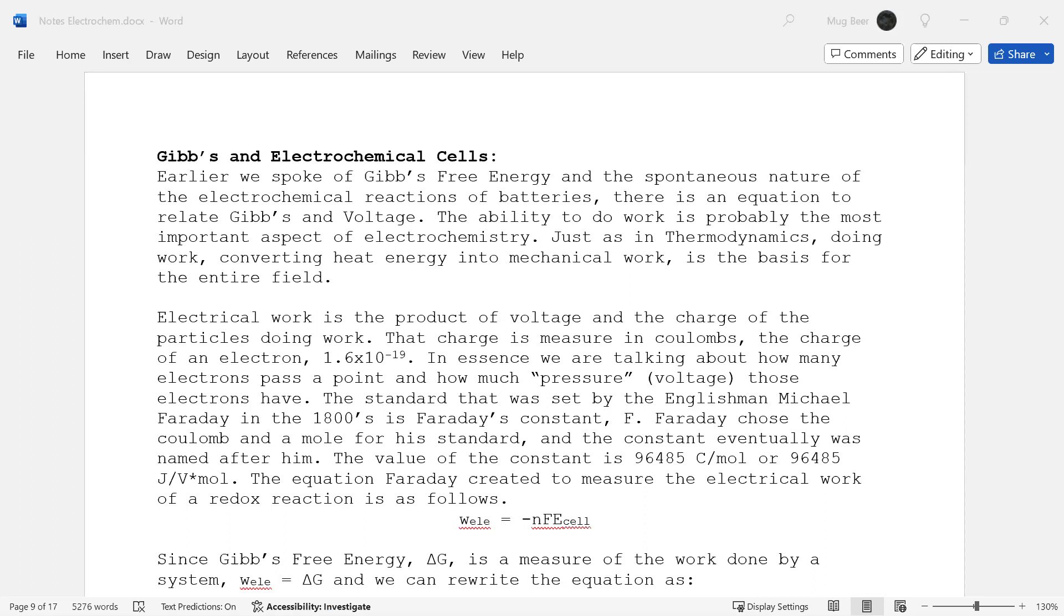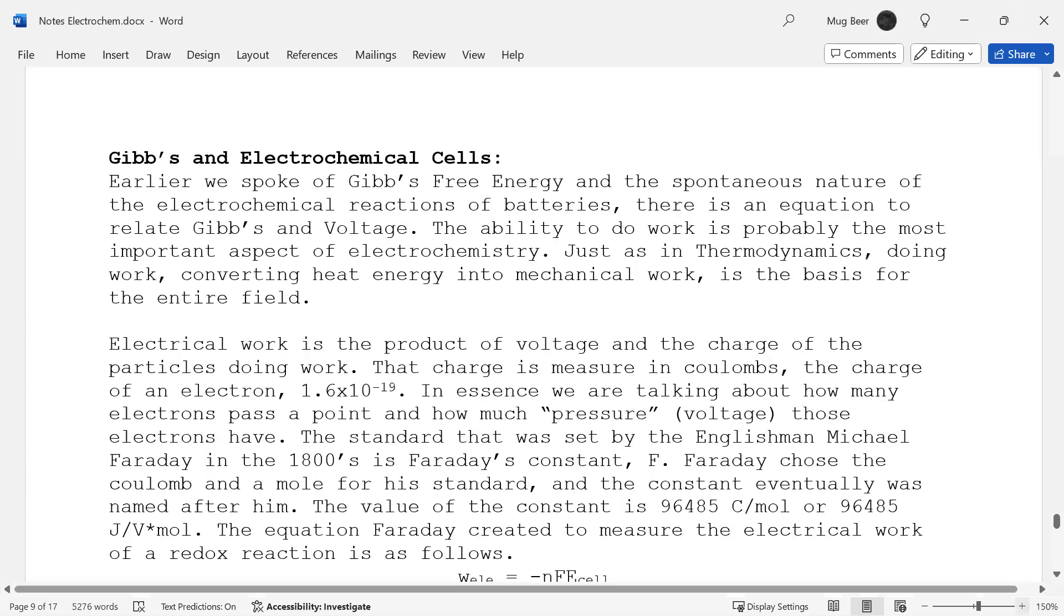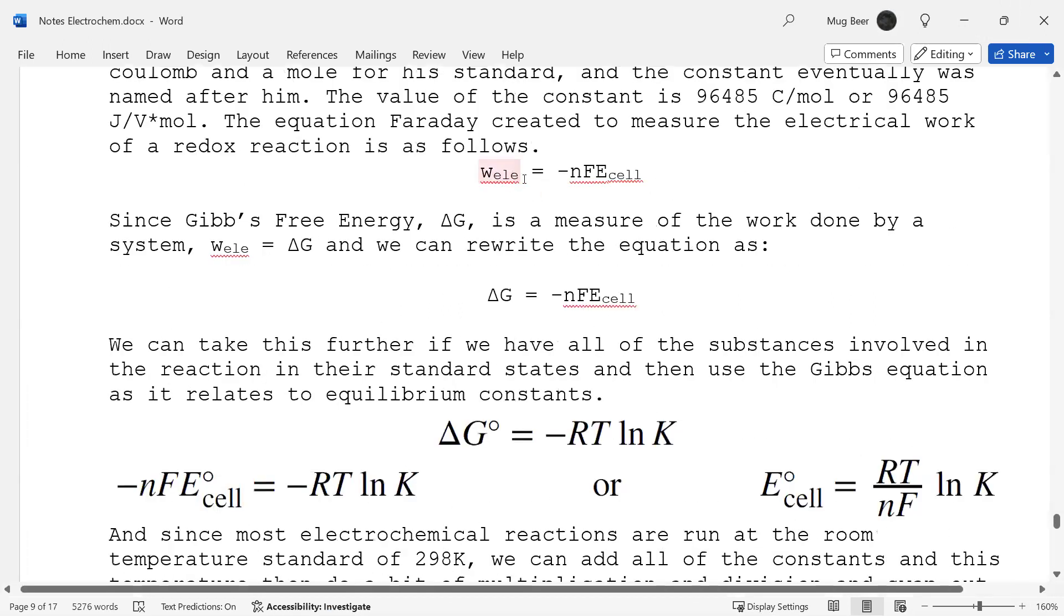So what we end up with is W_LE. So LE is electrical work in this case. So the electrical work is going to be equal to the negative of the number of electrons that pass a point times Faraday's constant times the voltage of the cell. So E of the cell is the voltage of the cell, the thing that you guys measured last week in lab. And then the Faraday's constant, we already told you, was coulombs, which is the charge of an electron and mole. And then we have moles there, the number of actual moles that go into the reaction.